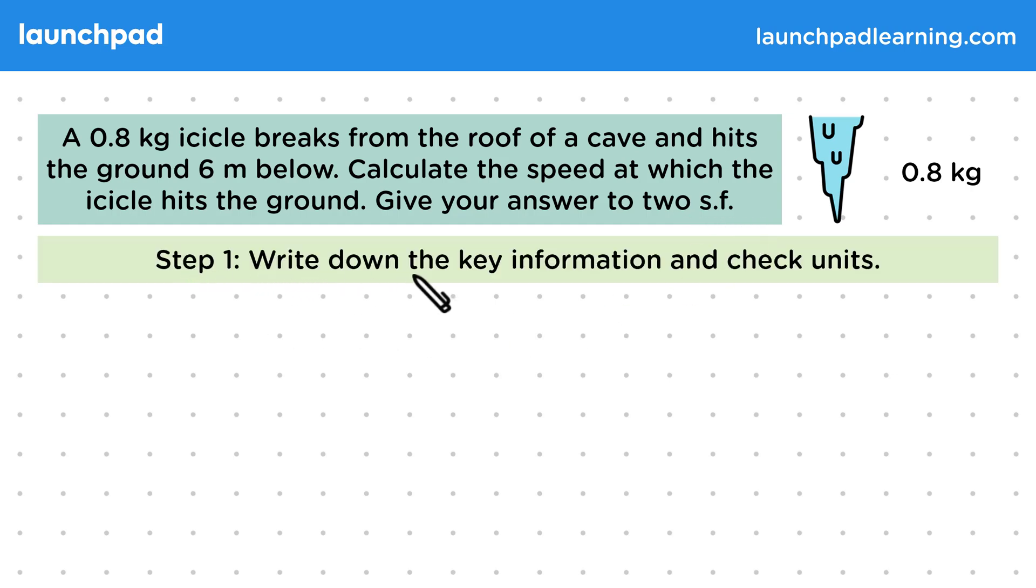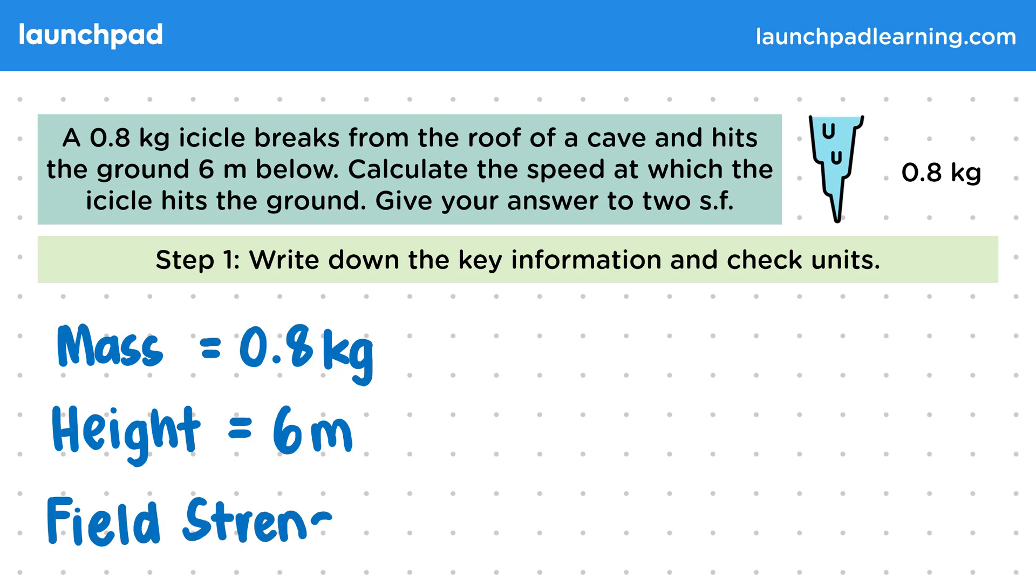So for step one, let's write down the key information and check the units. The mass is equal to 0.8 kg, the height is equal to 6 metres, and the field strength is equal to 9.8 metres per second squared. And we want to calculate the speed.